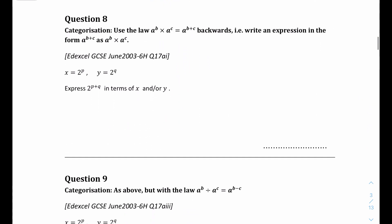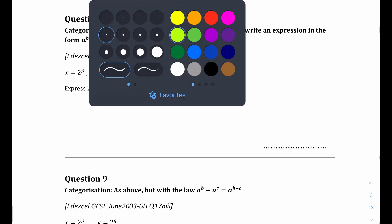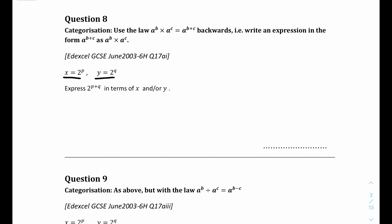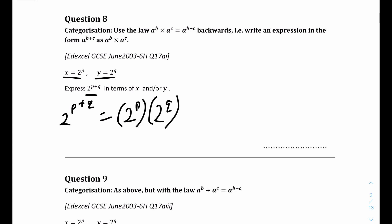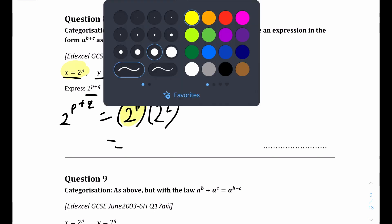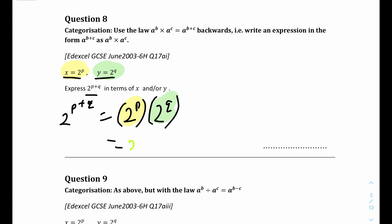We have quite a lot of questions - around 30 - so just watch to the end. Question 8: given x equals 2 to the power of p and y equals 2 to the power of q, express 2 to the power of p plus q in terms of x and/or y. We break it down: 2 to the power of p plus q equals 2 to the power of p times 2 to the power of q, which equals x times y. The answer is xy.